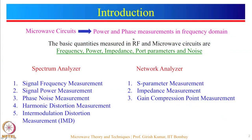Unlike low frequency circuits where voltage and currents are measured against time, in microwave circuits we usually make power and phase measurements in frequency domain. The basic quantities which are measured in RF and microwave circuits are frequency, power, impedance, port parameters which are S parameters, and noise.